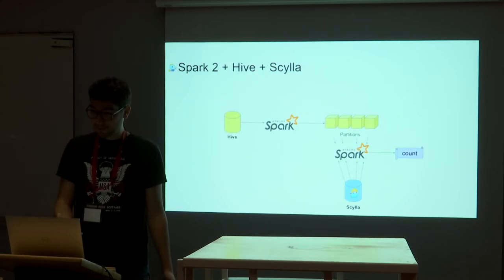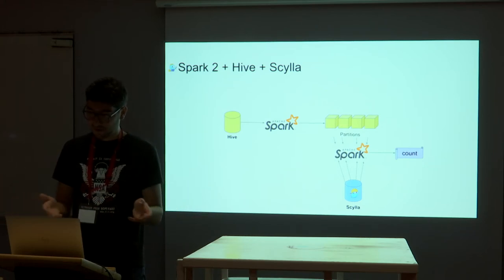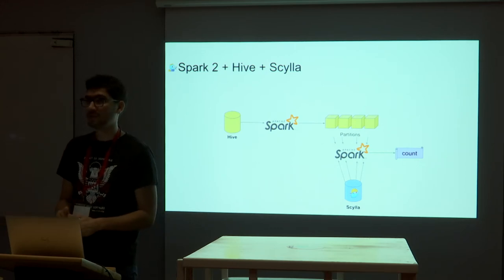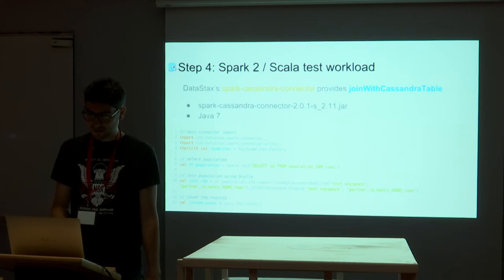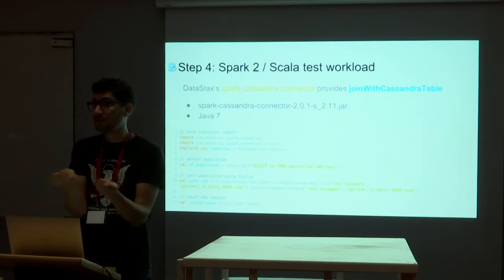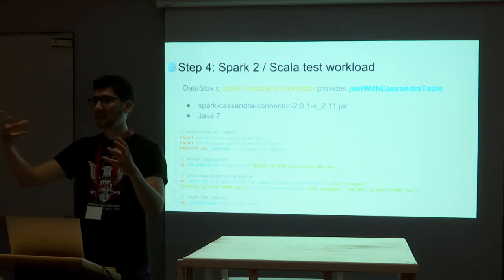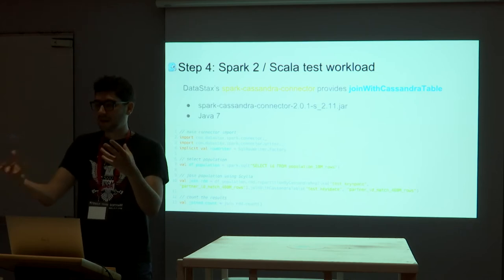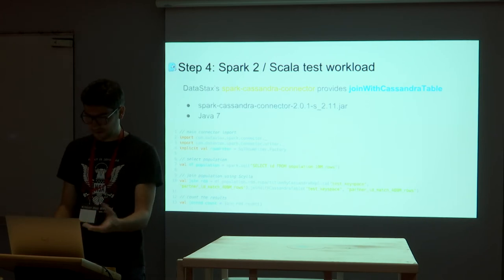We used Spark with the reference data set in Hive, but now the ID matching table sits in Scylla. Spark splits the Hive data into partitions just like usual, and instead of querying Hive, it queries Scylla to do the ID matching and then does the count. The Spark Cassandra connector has a 'joinWithCassandraTable' method that allows you to do the actual join in an efficient way — it knows where the data is stored on Cassandra, and since Scylla uses the same implementation, it can be clever about it.